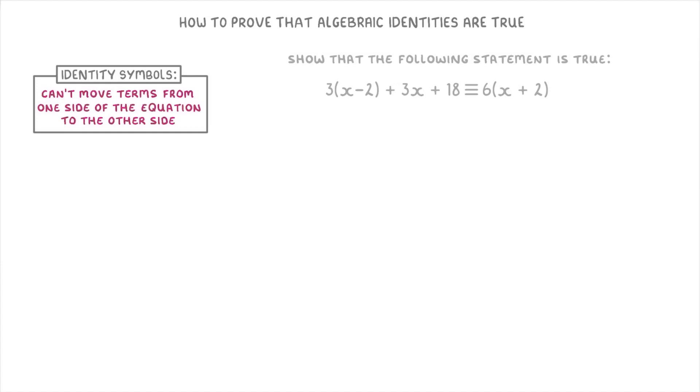For example, in this equation, we couldn't subtract 18 from both sides to move the 18 term from the left to the right. That isn't allowed with these identity equations.